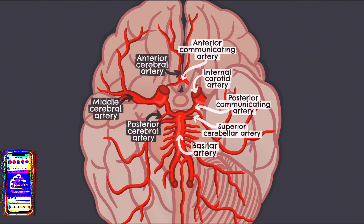Off the basilar artery there are a number of small arteries coming off at right angles which supply the pons. These are called the pontine arteries.